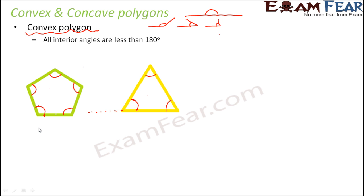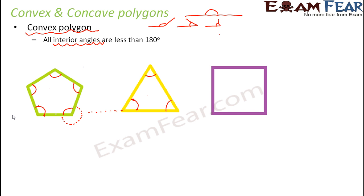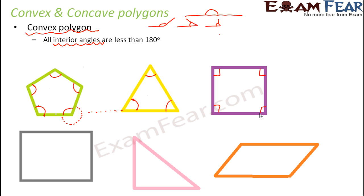An angle greater than 180 degrees would look like this — but in these shapes, we are talking only about interior angles, and all interior angles are less than 180 degrees. Look at the square: here all angles are 90 degrees, which is again less than 180. So this is also a convex polygon. All these examples are convex polygons because their angles are all less than 180 degrees.